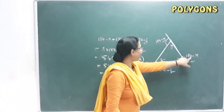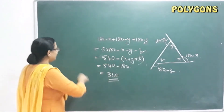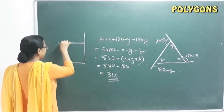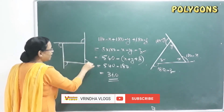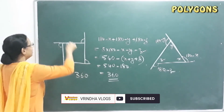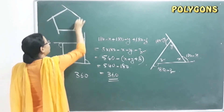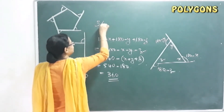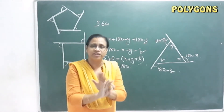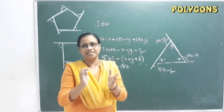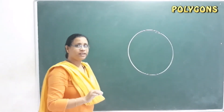So the sum of the exterior angles of any triangle equals 360 degrees. The outer angle sum is always 360 degrees for any polygon.